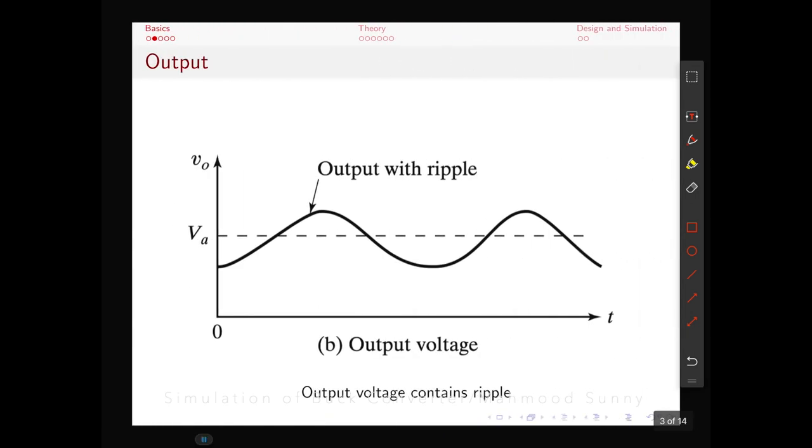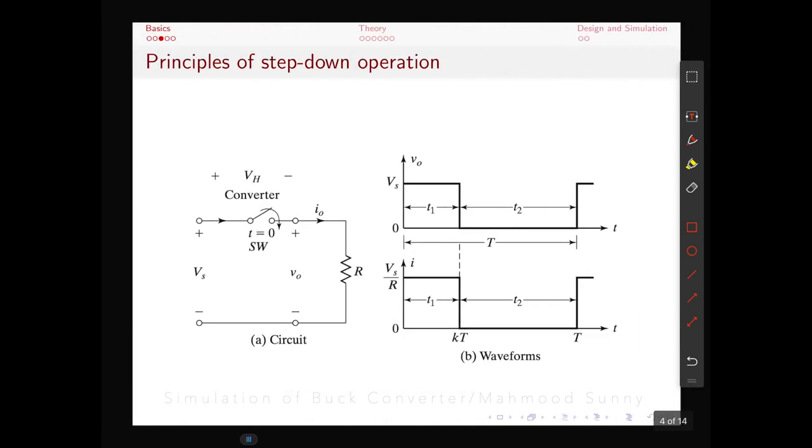However, even if the output voltage is DC, it still contains some AC component or ripple. Here is an example of a basic implementation of step down converter. On the left side we can see the circuit diagram. A supply voltage Vs is applied to the load R and the supply and load is connected with the help of a switch SW. If the switch is closed for the time T1 then we get a voltage in our output. And for the time T2 when the switch is open we don't have any voltage drop in our load.